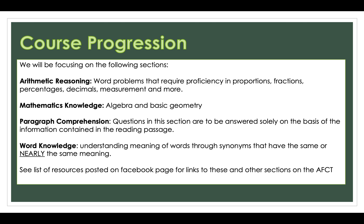In this online course I'm going to be doing various videos for each different section of the AFCT. For arithmetic reasoning, those are basically just word problems — generally a lot of proportions, fractions, percentages, and decimals. Mathematics knowledge is not part of the GT score, but I like to touch on it a little bit because knowing some basic algebraic rules will be beneficial to you. Paragraph comprehension is the reading portion, and word knowledge is when they give you a word and four choices for a synonym with the same or nearly the same meaning. Most folks are worried about the math section because most of this math we haven't done since elementary school, but that's why we're here doing this course.